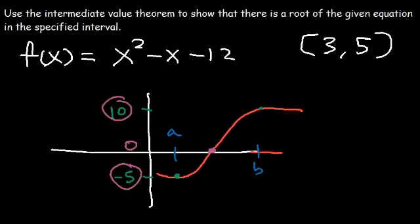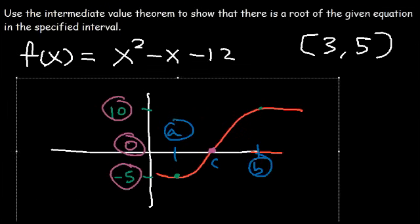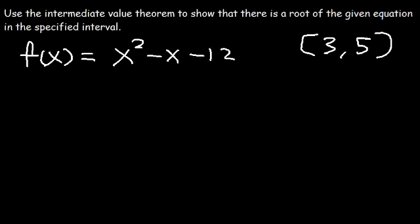There's some number that is in between negative 5 and 10, which is 0. The x value that corresponds to that y value of 0 we call c, and c has to be somewhere between a and b. So for there to be a root, f(3) and f(5) — one of them has to be positive and the other has to be negative. If that is true, then somewhere between 3 and 5 there's some number f(c) equal to 0.